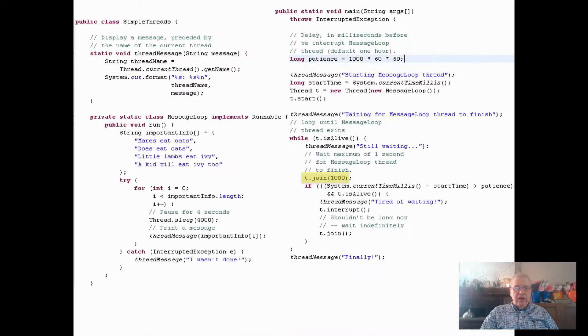Here's a set of code that's not too complicated but a little difficult to follow. There's a message route loop that implements runnable. Inside the run method is important info: mares eat oats, does eat oats, little lambs eat ivy, a kiddle eat ivy too. That's a rhyme my mother used to tell me when I was a toddler. The run method loops through, calls thread message with important info, and sleeps for four seconds approximately, then prints out the message.